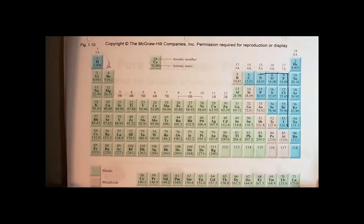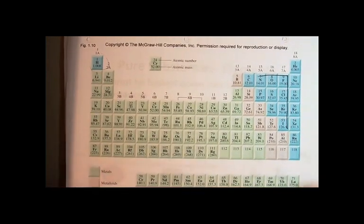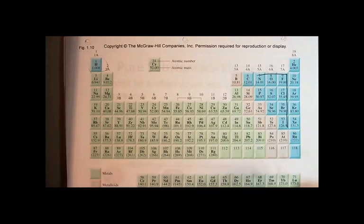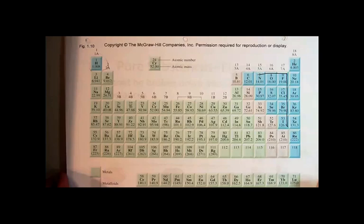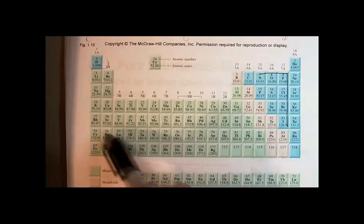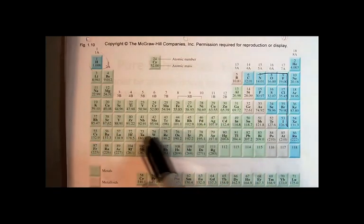The other thing to notice right now from the periodic table is that I mentioned that most of the elements are metals. And on this periodic table you can see all the green boxes are considered metals.